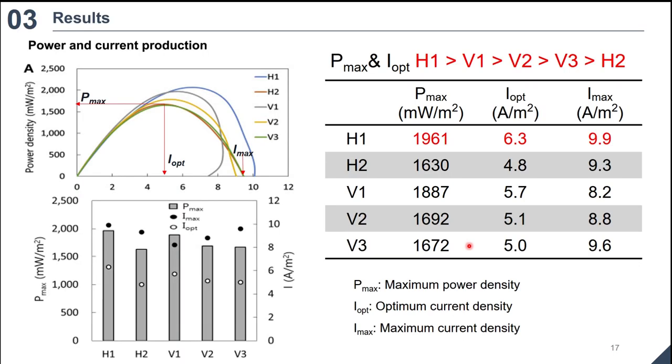Results. Polarization and power density results showed that H1 produced highest power and current. Maximum power density and average was highest in H1, 1961 milliwatts per square meter, followed by V1, 1887 milliwatts per square meter, V2, 1692 milliwatts per square meter, V3, 1672 milliwatts per square meter, and H2, 1630 milliwatts per square meter.